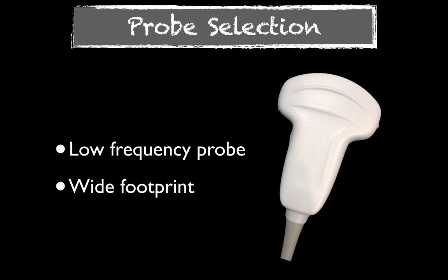For our probe, we're going to use a low-frequency probe with a wide footprint. This is important because especially in our obese population it's hard to get a good view of the aorta and we want the best dimensions we can get. The wide footprint sometimes helps displace bowel and allows you to put more pressure without making the person feel like you've punched them. As long as you apply slow, constant pressure they should tolerate it well — even a very obese patient can tolerate quite a bit of pressure when trying to find that aneurysm.